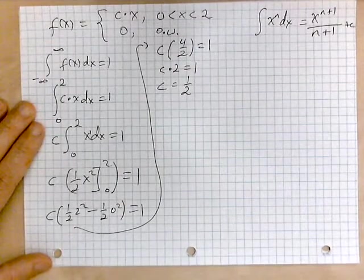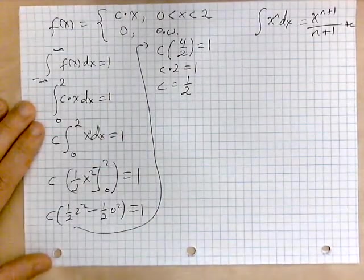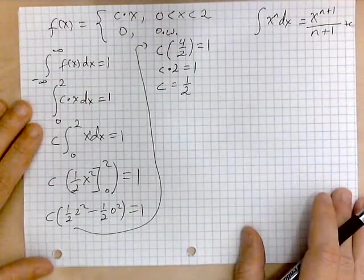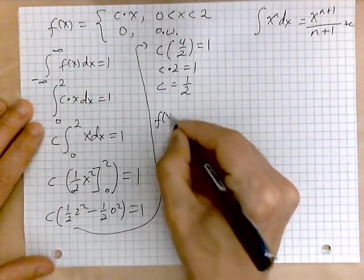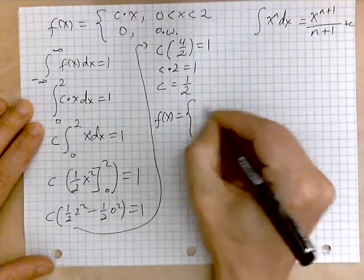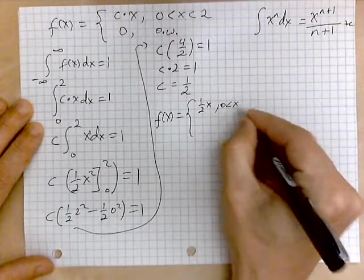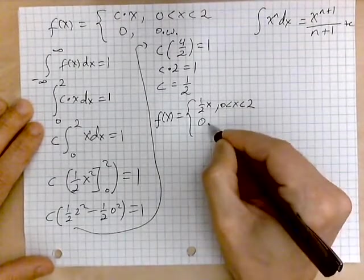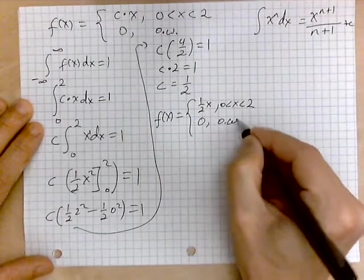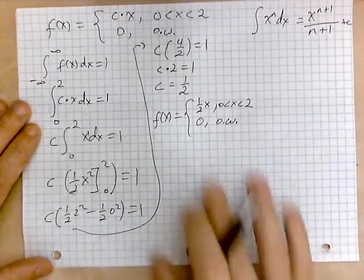So the constant we have to multiply our function by here, the c, is equal to 1 half. So now let's rewrite the function so it's more concrete. f of x equals 1 half of x between 0 and 2 and 0 otherwise. This is the concrete function.